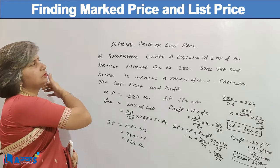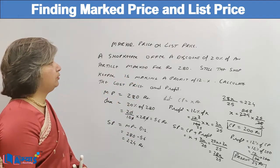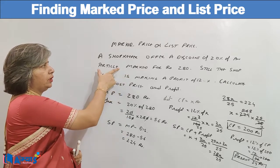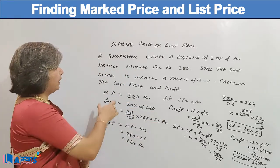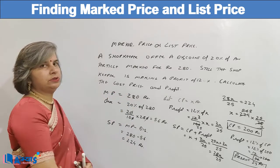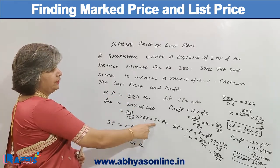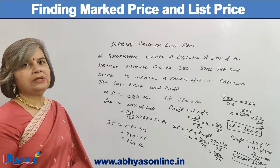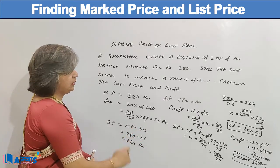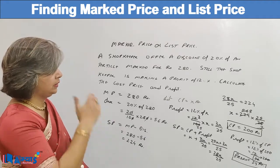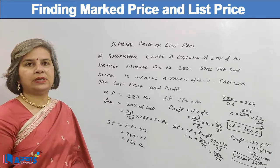As in this question, a discount of 20% was offered on an article marked for Rs. 280. So when the mark price was Rs. 280, the discount was 20% of 280, which came out to be Rs. 56. The selling price is mark price minus discount, so it came out to be Rs. 224. This is how we calculate the selling price.